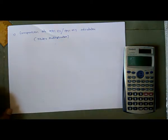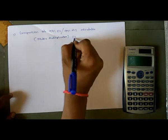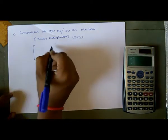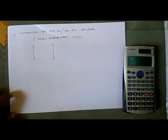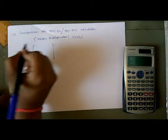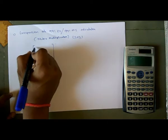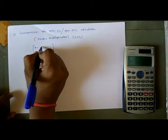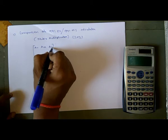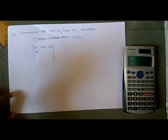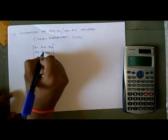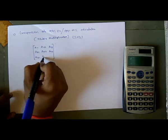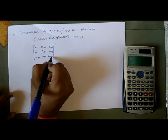We can solve a matrix up to 3×3. In calculator language, our matrix elements are: first digit is A11, second is A12, third is A13. Then the second row is A21, A22, and A23. And the third row is A31, A32, and A33.